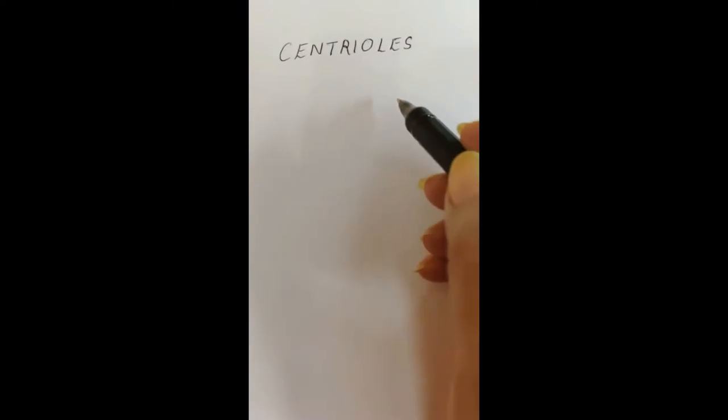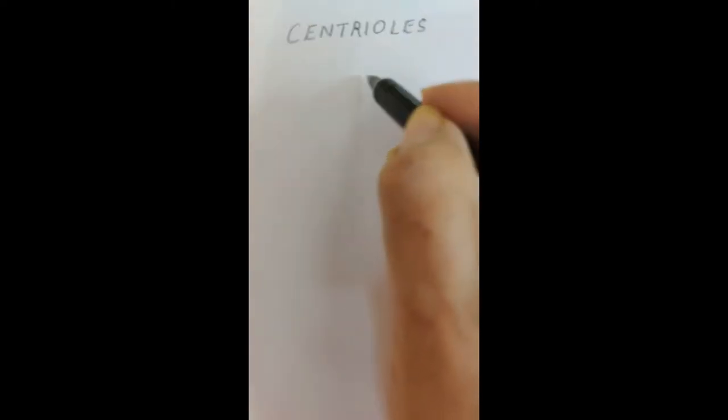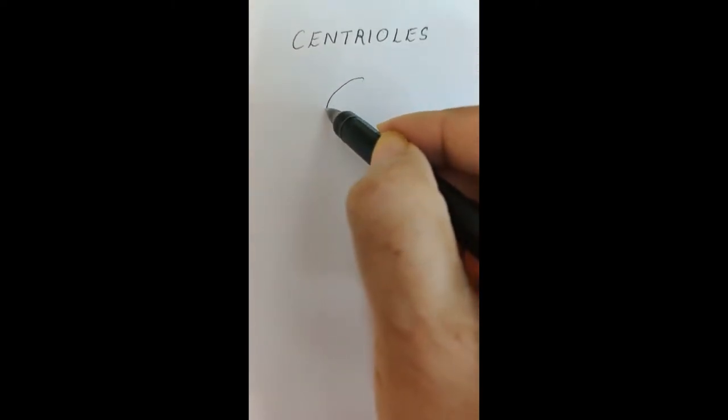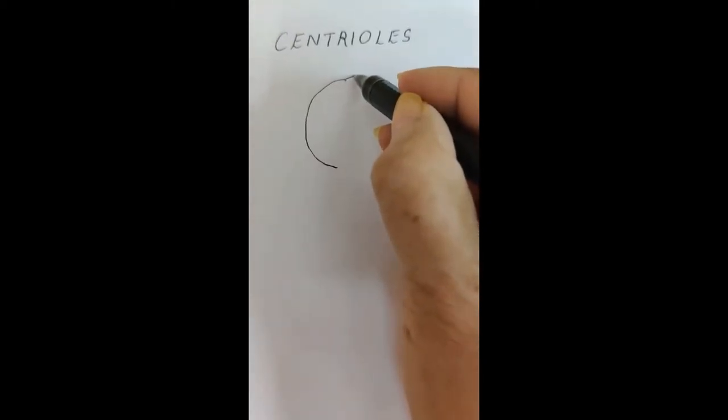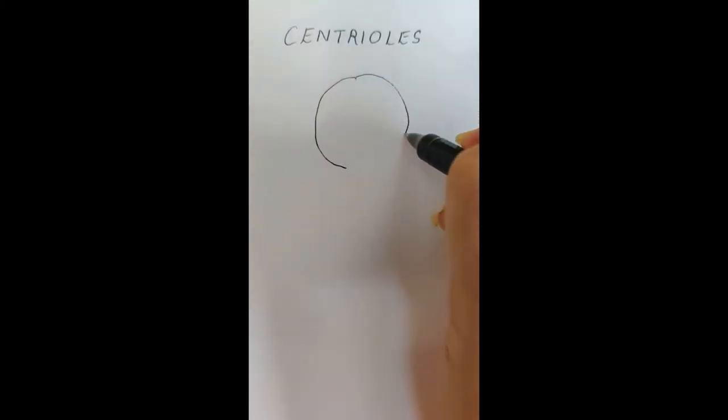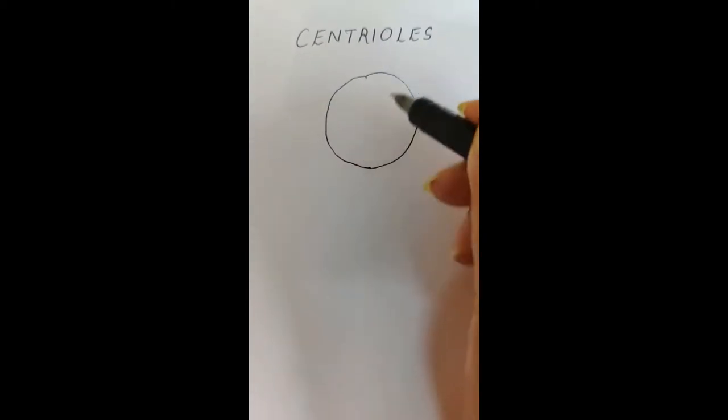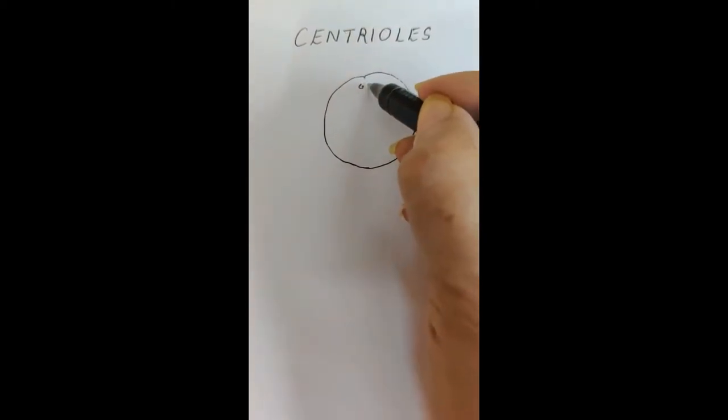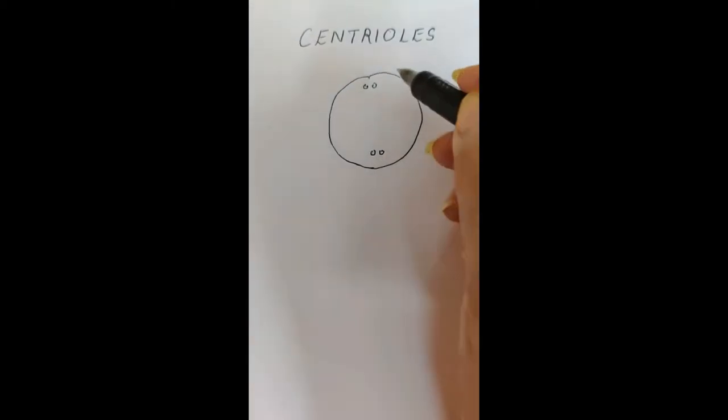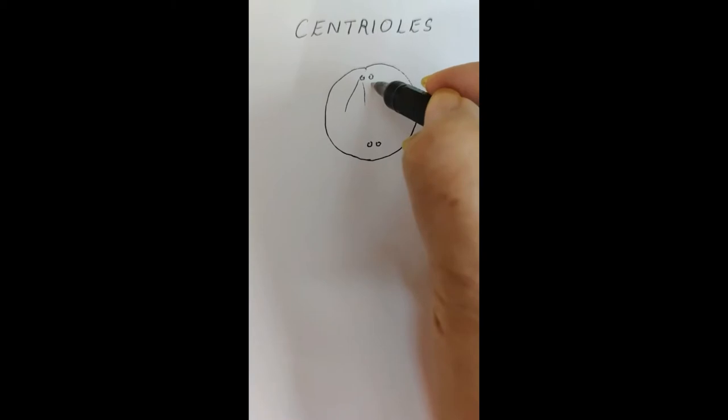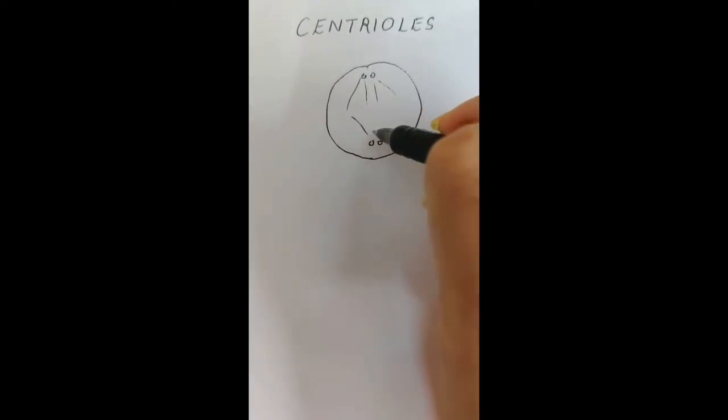Whenever we draw a cell dividing, especially an animal cell, we know that there are a pair of centrioles present on the two ends of the cell which we call poles, and they are responsible for making the spindle fibers.